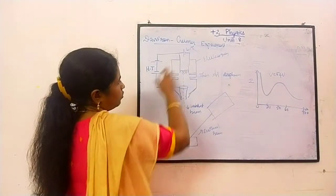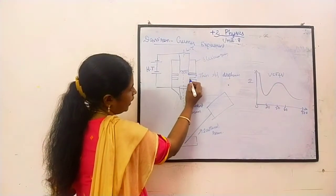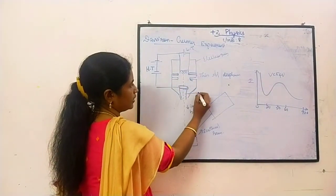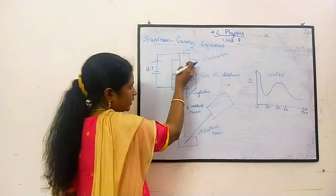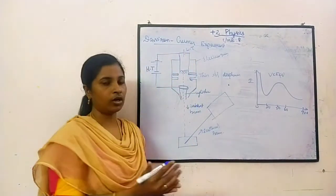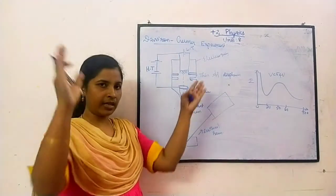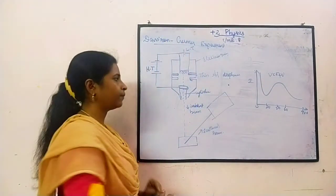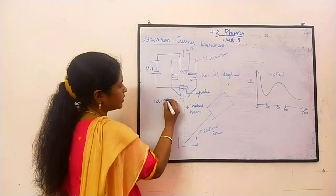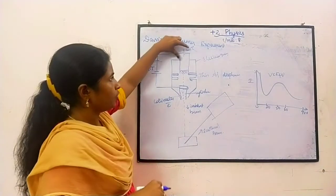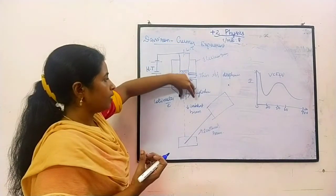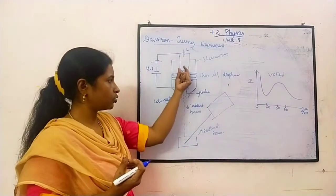When electrons emit out, there is a thin aluminum cylinder here. What it will do is it will collimate the electrons through a straight line. This is the function of this aluminum cylinder - it will collimate the electrons.